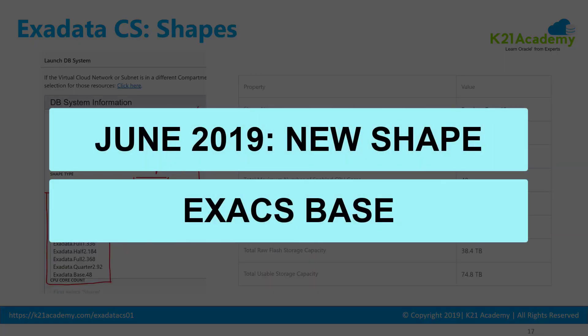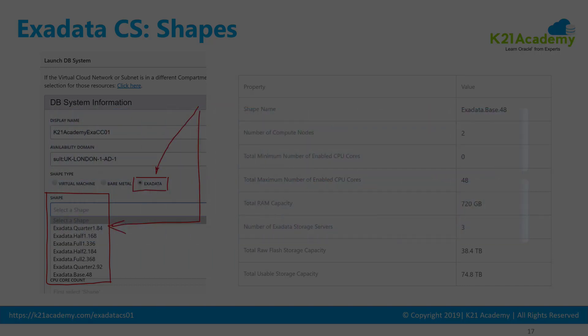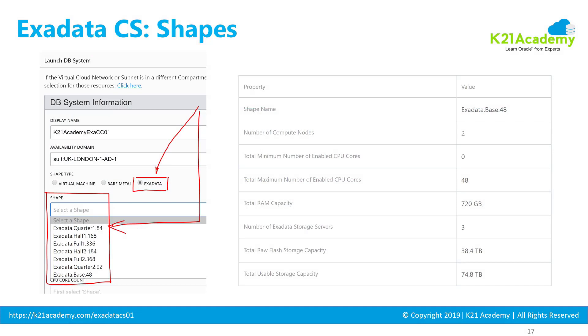Recently, on June 14th 2019, Oracle also released another shape called Exadata Base, which is similar to the quarter rack but with lower specs. In terms of CPUs, you can go only up to 48. Usable disk space and memory are also lower than the quarter rack — you can correlate it with roughly one-eighth of a rack. So those are the four shapes: quarter, half, full, and base.